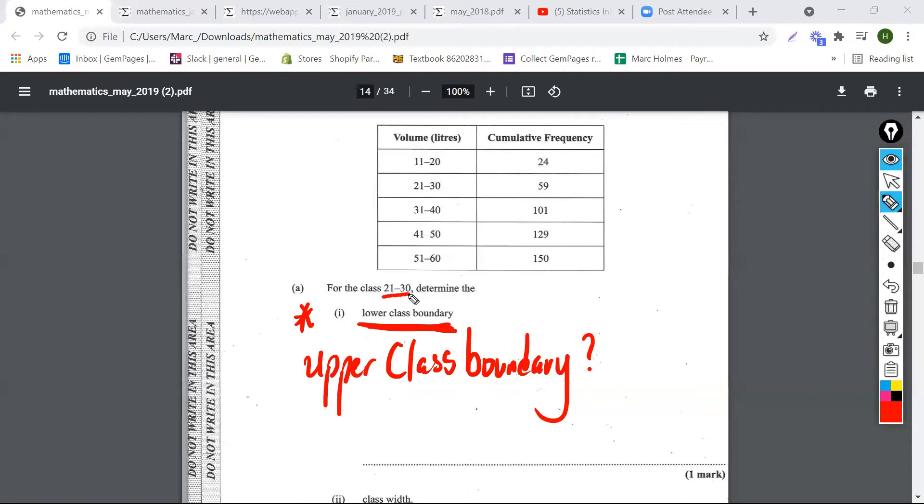And it says here for the class 21 to 30, which is the second class, determine the lower class boundary. Now what in the world does that mean? So basically, I'm going to show you what the lower class boundary is. So remember this is a class 21 to 30.